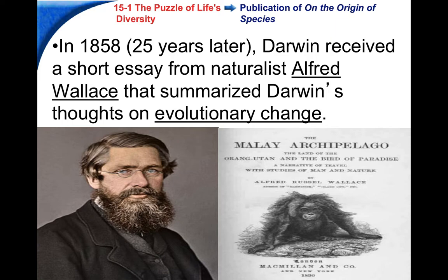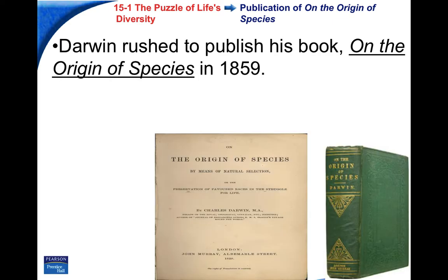There was another scientist named Alfred Wallace who, 25 years later, sent Darwin his own manuscript. Wallace had been working in Borneo studying orangutans and other organisms and had developed his own idea of evolutionary change. When Darwin read Wallace's work, he realized it was the same ideas he had written 25 years ago. So instead of waiting, Darwin wanted credit and published his book as soon as he could — it came out as 'On the Origin of Species' in 1859.